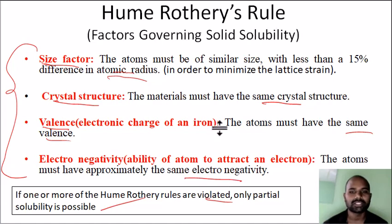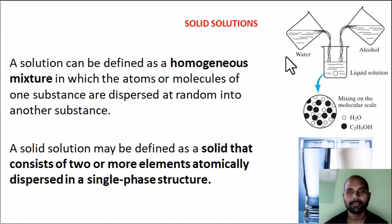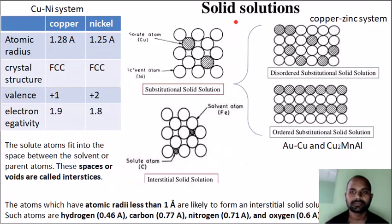Let's take a look at the solid solution. A solution is a homogeneous mixture where atoms and molecules are completely dispersed. Solid solution is like a liquid solution — for example, if you mix alcohol and water it becomes homogeneous. Water and milk is a complete liquid solution. Similarly, a solid solution is one where two or more elements are atomically dispersed in a single-phase structure. That is a solid solution. We have two types of solid solutions: substitutional solid solution and interstitial solid solution.